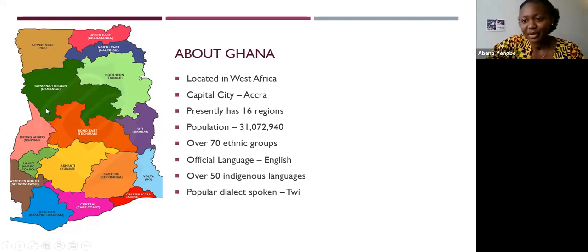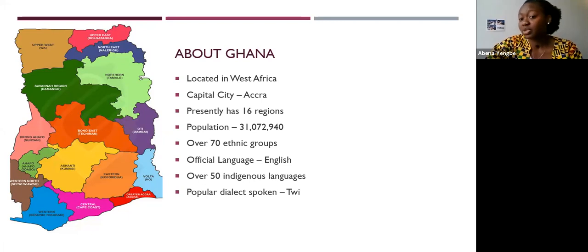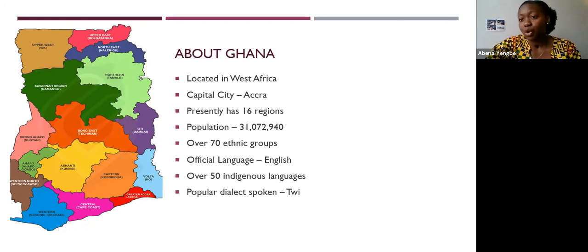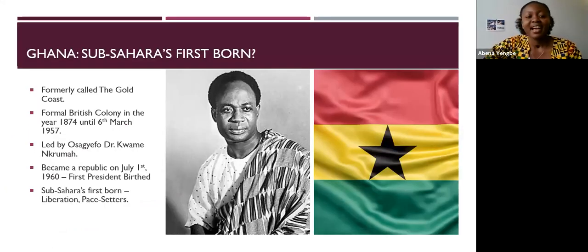Here is a map of Ghana showing all 16 regions. Presently Ghana is home to about 31,772,940 people, and there are over 70 ethnic groups in Ghana, with the Akan being the largest ethnic group. The official language spoken in the country is English because we were colonized by the British. However, there exist over 50 indigenous languages, and the most widely spoken is Twi, a dialect of the Ashanti people.